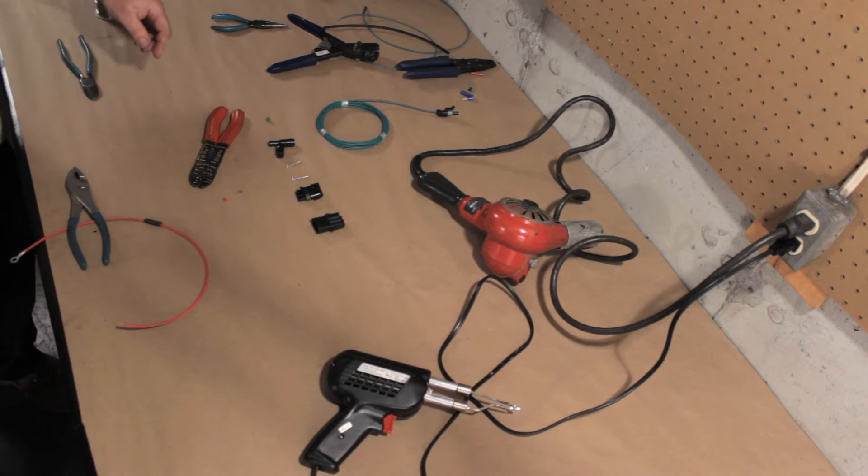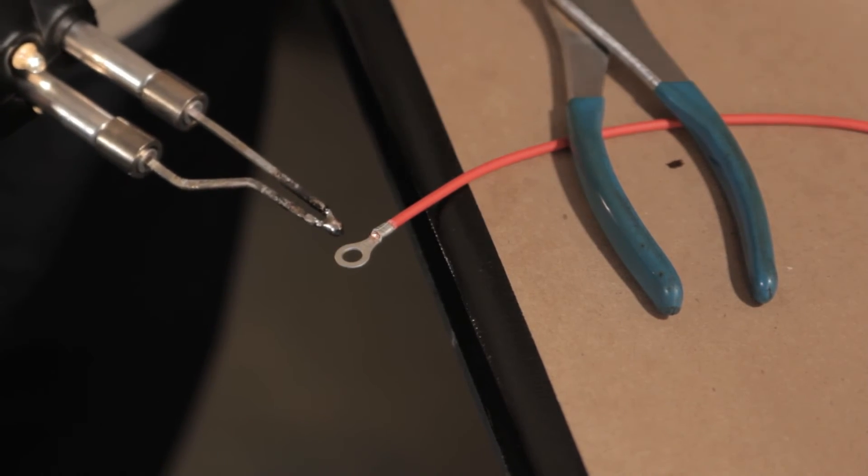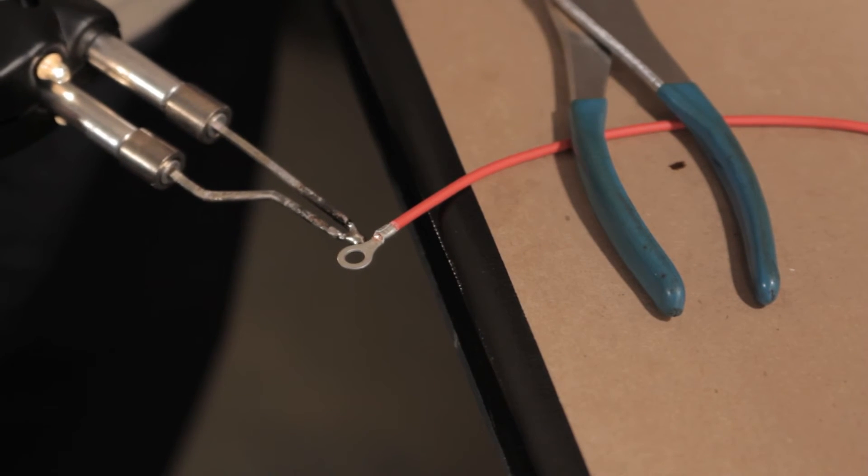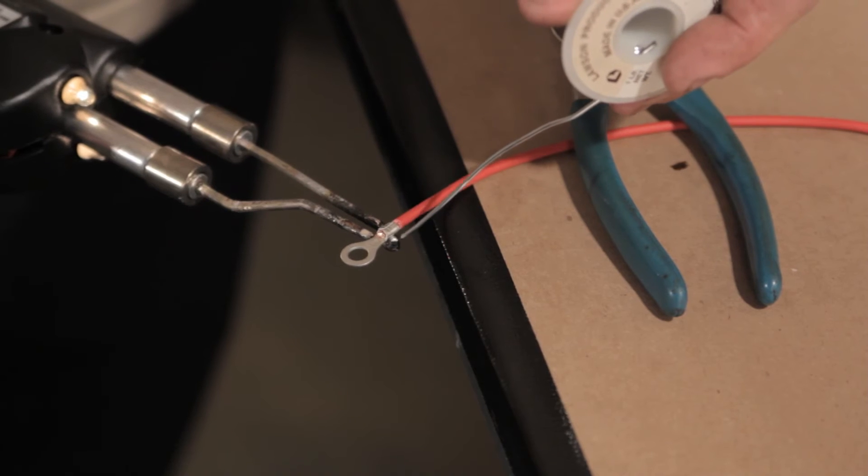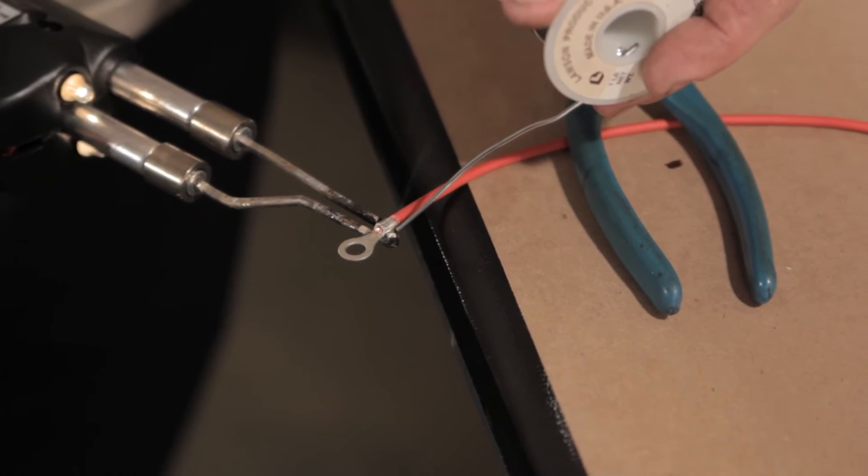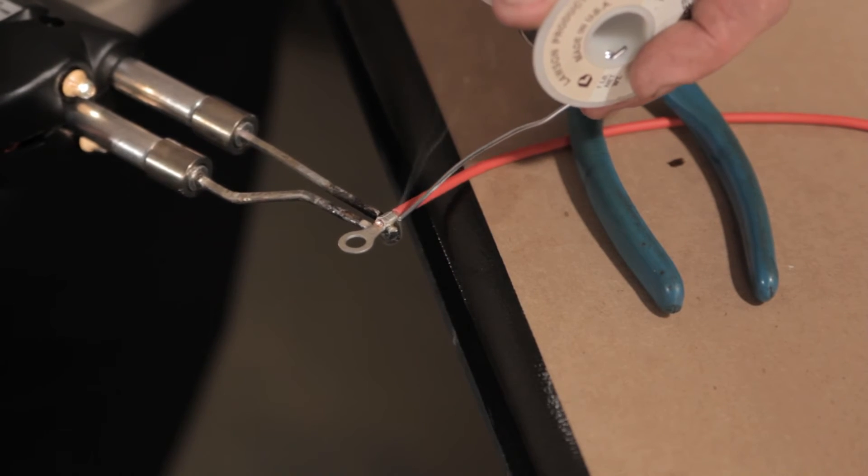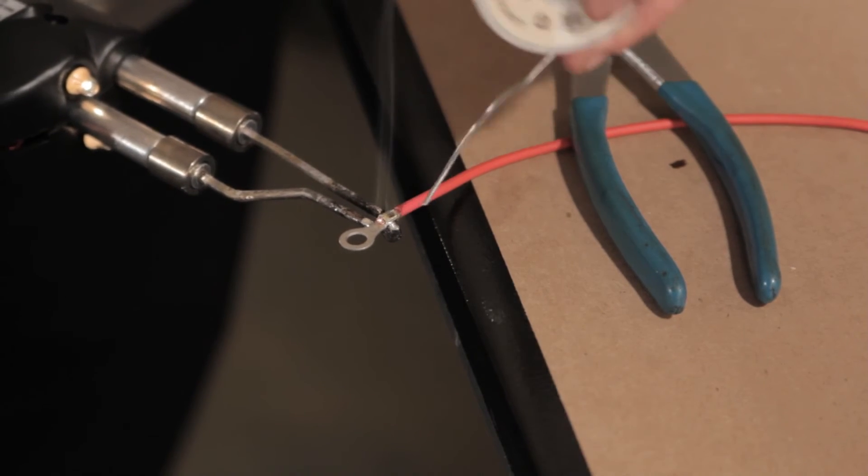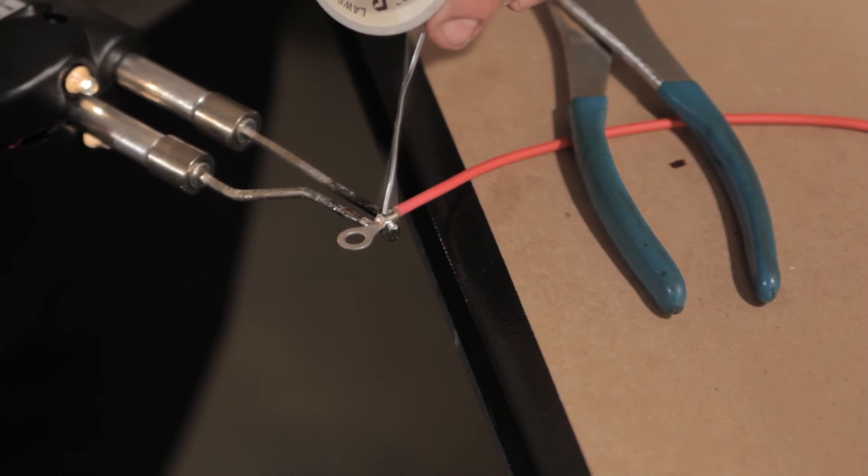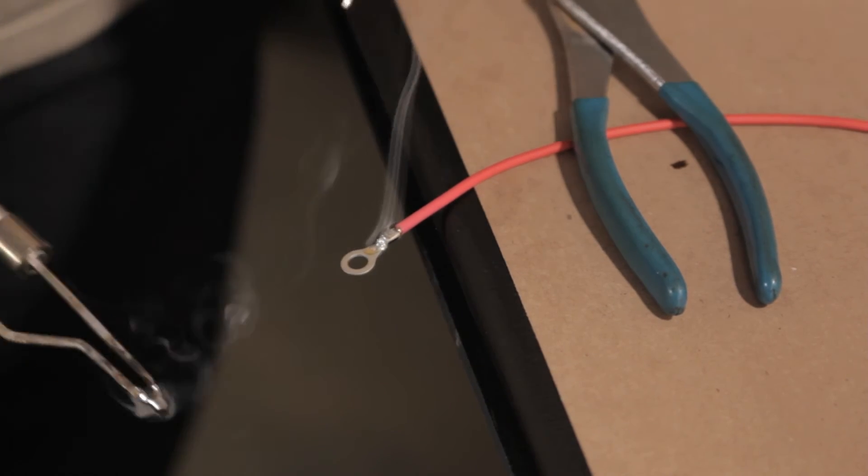And then we're going to solder it on. Same deal. Get your gun warmed up. Put it up underneath the terminal. Get your solder down right where the gun meets the terminal. That helps to transfer the heat up to the terminal so you can get the solder in there. And then you want to put enough on, you can actually see the solder travel up inside the joint. When the joint's all covered, you're done.